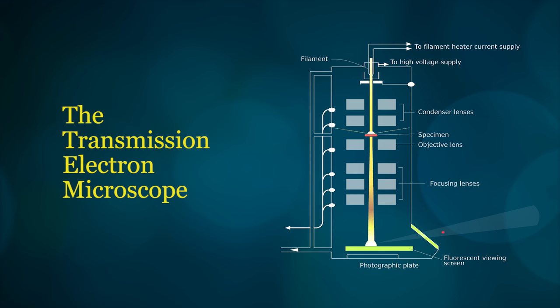The improved resolution is achieved by using a high velocity beam of electrons to produce the image instead of light rays. At the top of a tall evacuated column is an electron gun that sends a beam of electrons through the specimen.